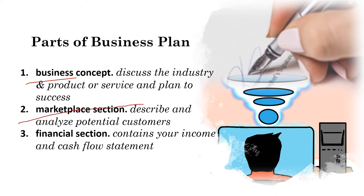The market section is where you describe and analyze the potential customers — who and where they are, and what makes them buy your products. You also describe the competition of the market and how you position yourself to win in it. The financial section contains the income and cash flow statement, including the balance sheets and other financial ratios such as the break-even analysis, which may require help from your accountant and good spreadsheet software programs.